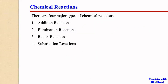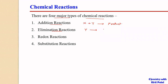To recap, we had seen that there are four major types of chemical reactions. One is an addition reaction where two reactants X plus Y give rise to products. The second type is elimination reactions, where a reactant splits in such a way that two different products are formed.